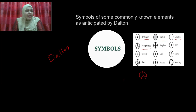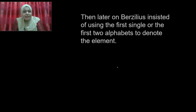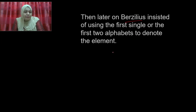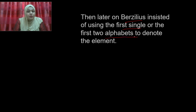As the number of elements increased, it became very difficult to draw symbols for each element. So Berzelius suggested an easy way to identify the symbol. Berzelius suggested using the first letter or the first two letters of the element's name in the alphabet to denote the element.